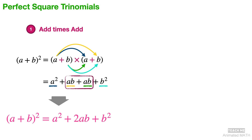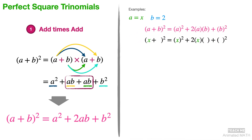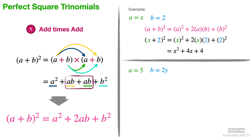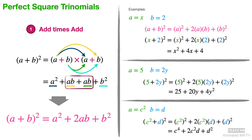Although I used a and b to recreate the pattern, in reality you can substitute different values to it. Let's say that a is equal to x and b is equal to 2. Substitute x for all a's and substitute 2 for all b's. Its expanded form is equal to x squared plus 4x plus 4. And here are a few more examples.